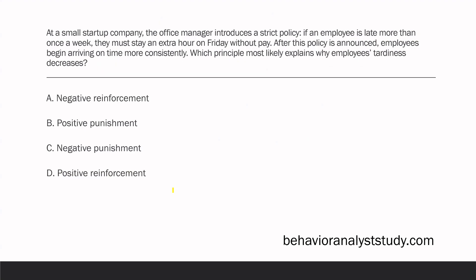At a small startup company, the office manager introduces a strict policy: if an employee is late more than once a week, they must stay an extra hour on Friday without pay. After this policy is announced, employees begin arriving on time more consistently. Which principle most likely explains why employees' tardiness decreases? This is a pretty straightforward question, but we want to read carefully — the question is asking about the decrease in employees' tardiness.